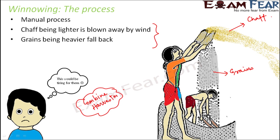An interesting question: why do we want to separate grains from chaff? If we can eat grains, why can't we eat the chaff or the stocks? The simple reason is that grains — like the rice we eat — are digestible by human beings. But the chaff, these dry coverings of the seeds, are indigestible by humans and therefore need to be removed.